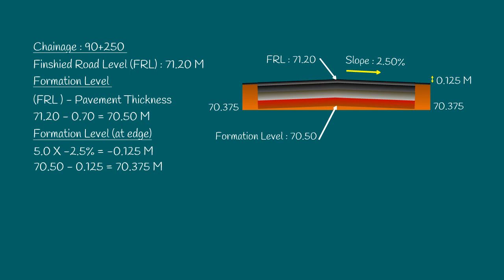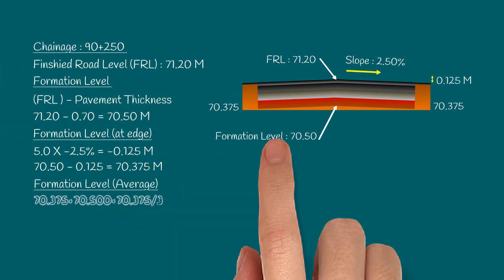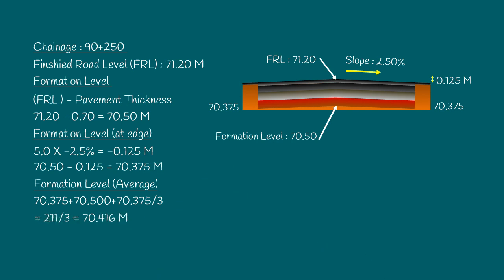For easy calculation purposes, let us take the average of these formation levels, which is 70.375 plus 70.5 plus 70.375, divided by 3, equals 211.25 divided by 3, equals 70.416. The average formation level at this chainage is 70.416.